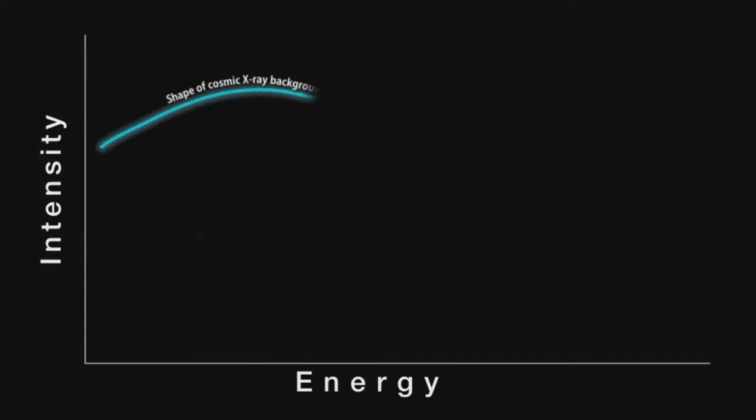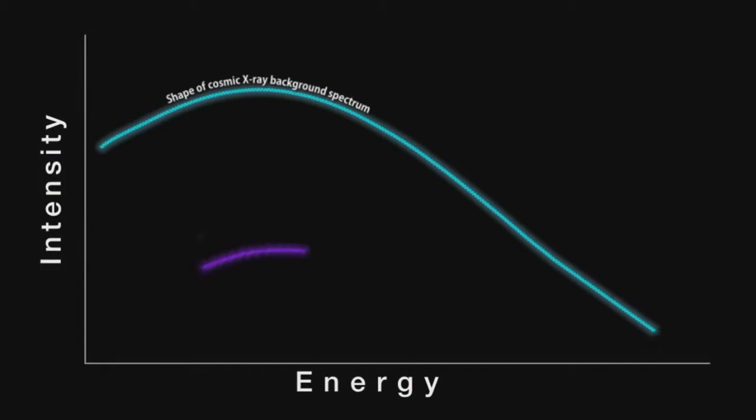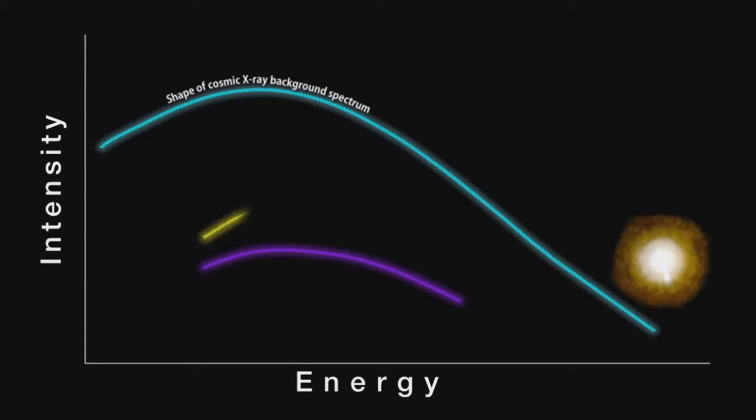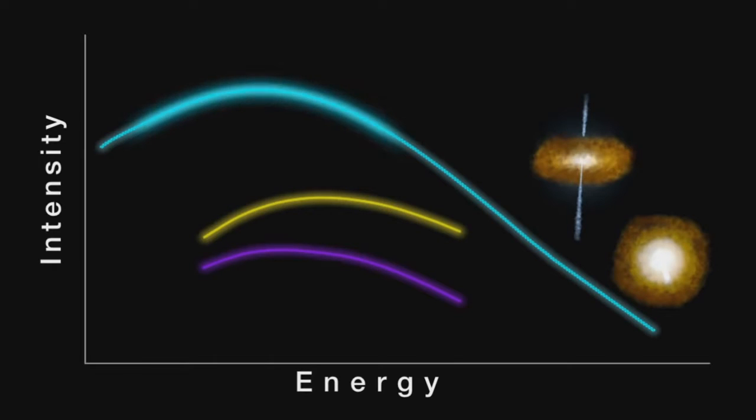Astronomers have long suspected that active supermassive black holes in galaxies were responsible, but they just couldn't find enough of them to account for the X-ray glow, especially the peak of the energy spectrum.